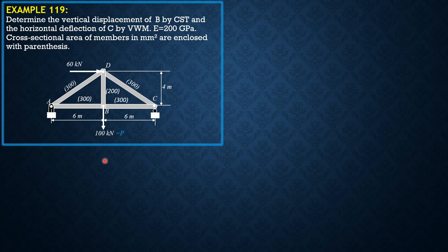So summation moment about C equals zero. Ay times 12 plus 60 times 4 minus P times 6, so Ay in terms of P is 0.5P minus 20. Take note that P has a real value of 100 kilonewton downward.